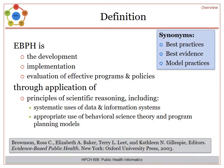EBPH has many aspects, including the development, implementation, and evaluation of programs and policies through applying scientific reasoning. Notice that the use of data and information systems is one piece of EBPH. This data may be found in journal articles or as stand-alone data on a website.